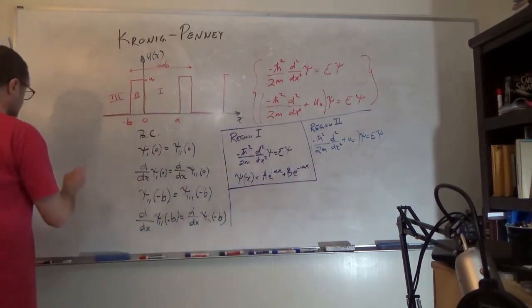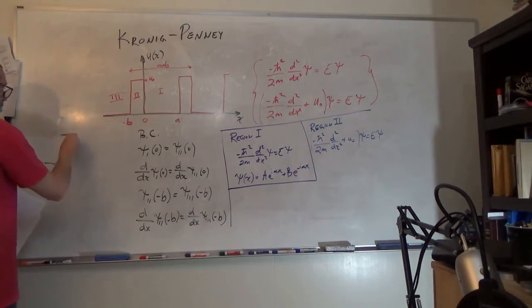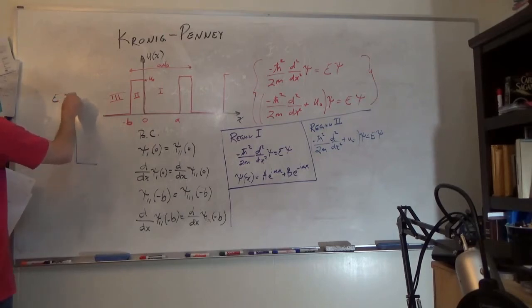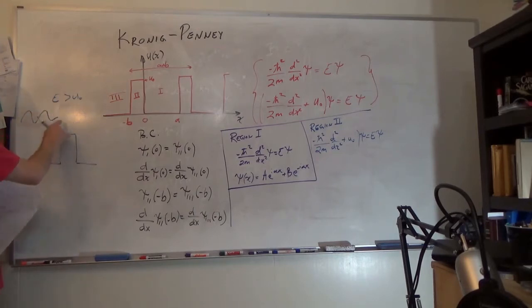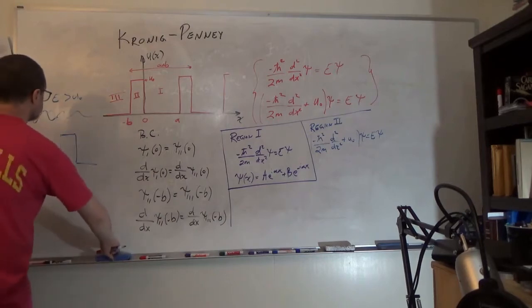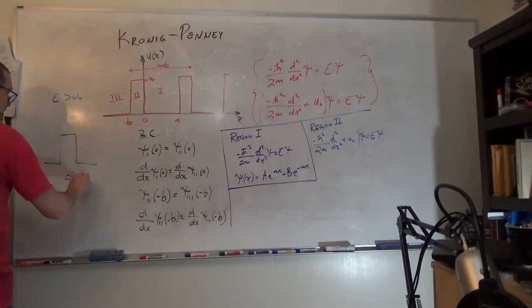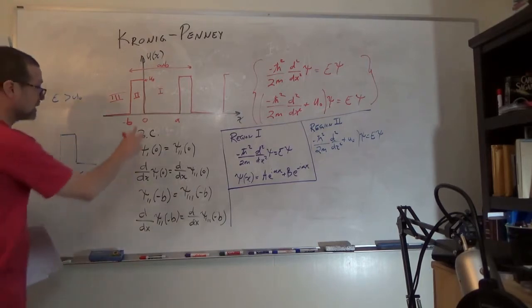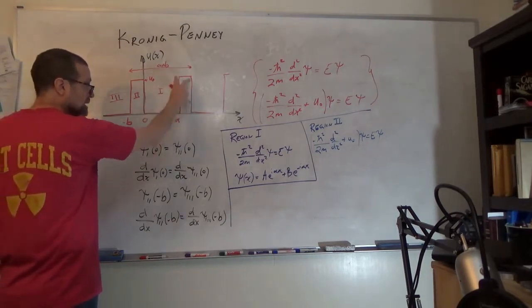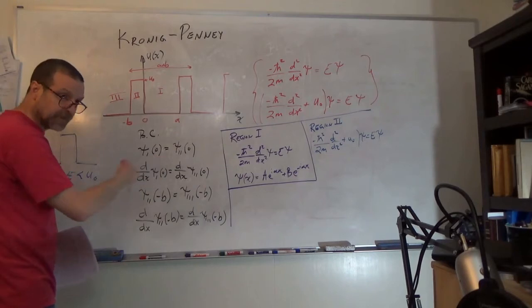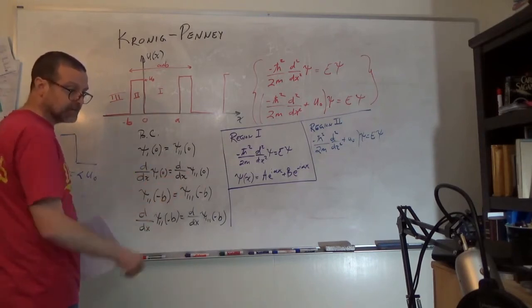One regime is where the energy is larger than u naught. Basically, we're talking about a wave that's coming in, and when it reaches this barrier, it's going to go through and it's also going to scatter. So that's an unbounded region. The second is when E is less than u naught. This is the bounded solution because we're bounding the electron inside of these wells. That's what we have in the case of atoms.